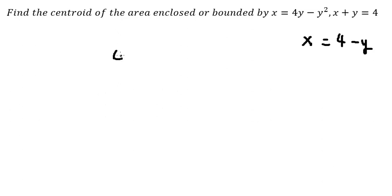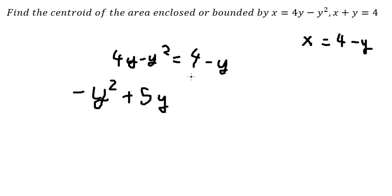So we have 4y minus y² equals to 4 minus y. I will put this one to the left, and we have negative y² plus 4y plus y, which gives us 5y minus 4. We have negative y² plus 5y minus 4 equals to 0.